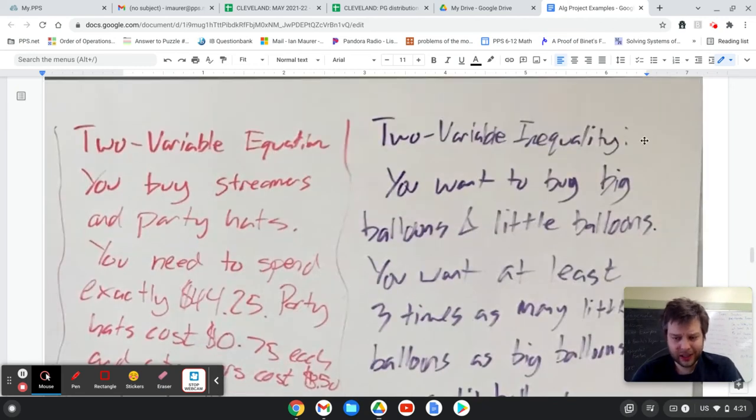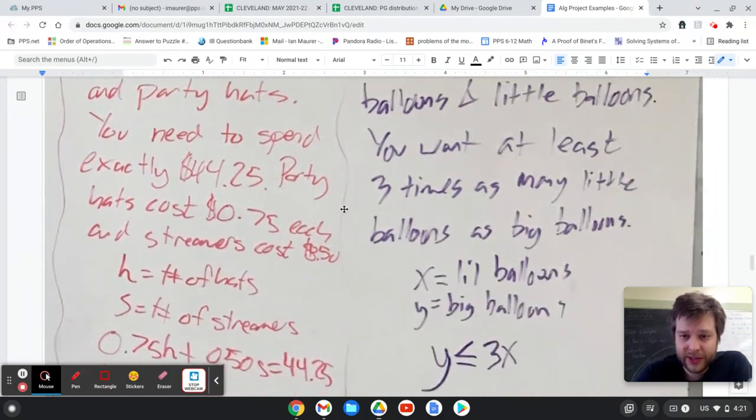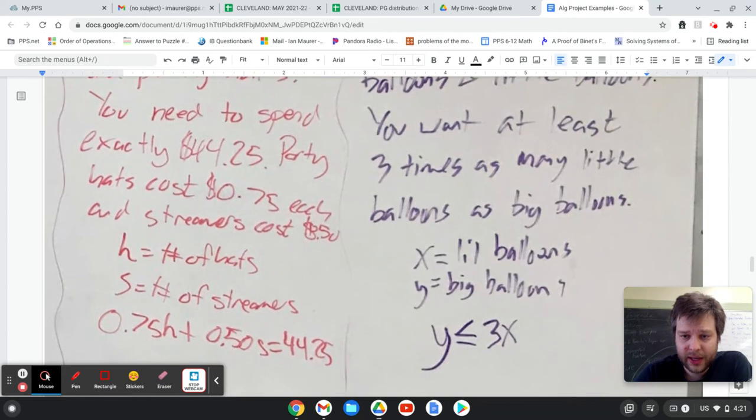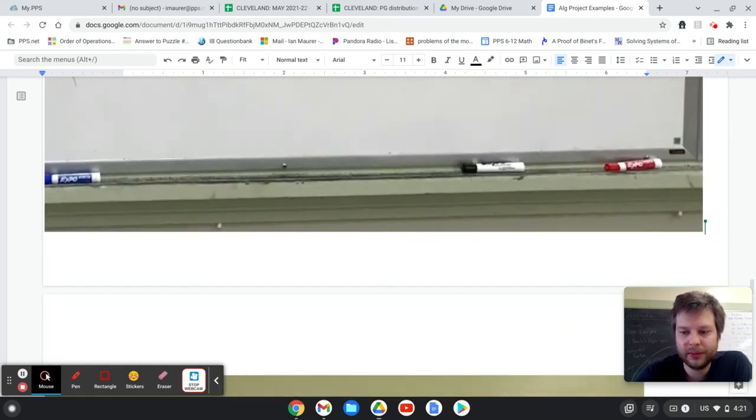And then my two variable inequality, just a little bit silly - you've got big balloons and little balloons, and you want at least three times as many little balloons as big balloons. And so there we go. Big balloons and little balloons, three times involved.